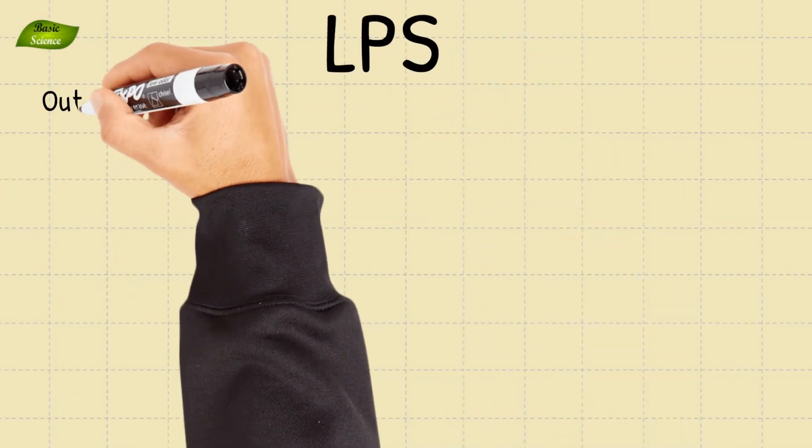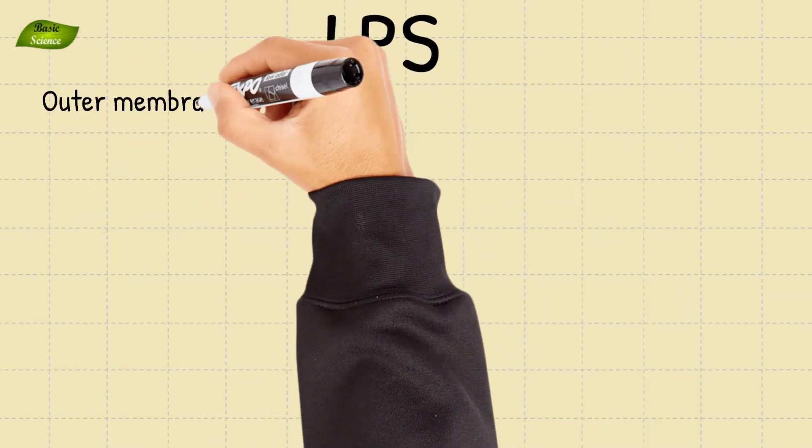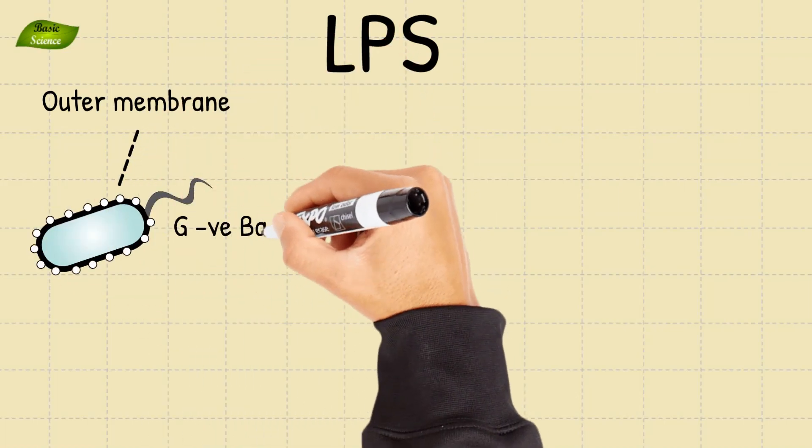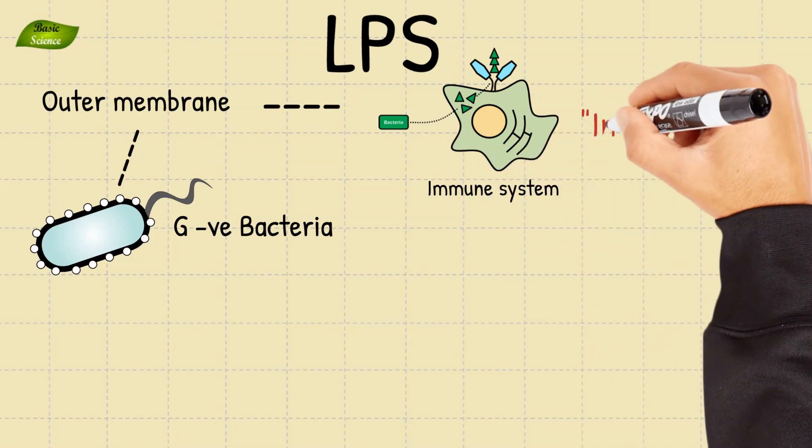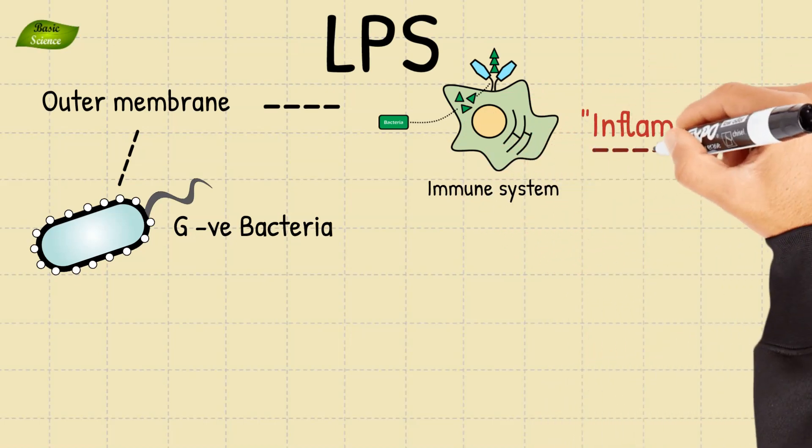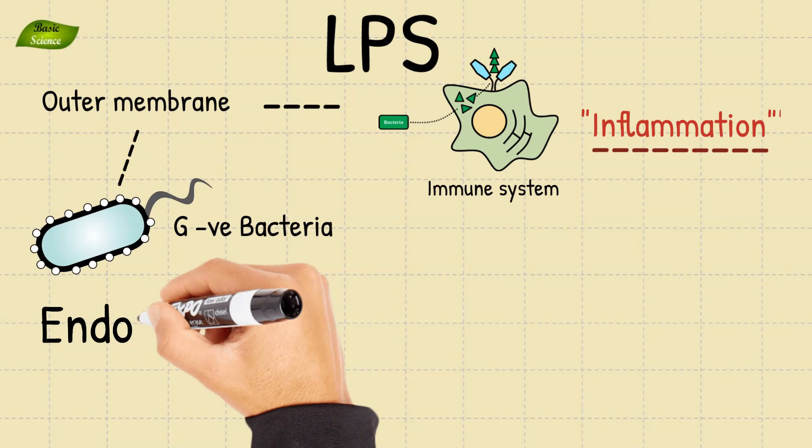Lipopolysaccharide, or LPS, is a component of the outer membrane of gram-negative bacteria. It is a potent stimulator of the immune system and can cause inflammation if it enters the bloodstream.